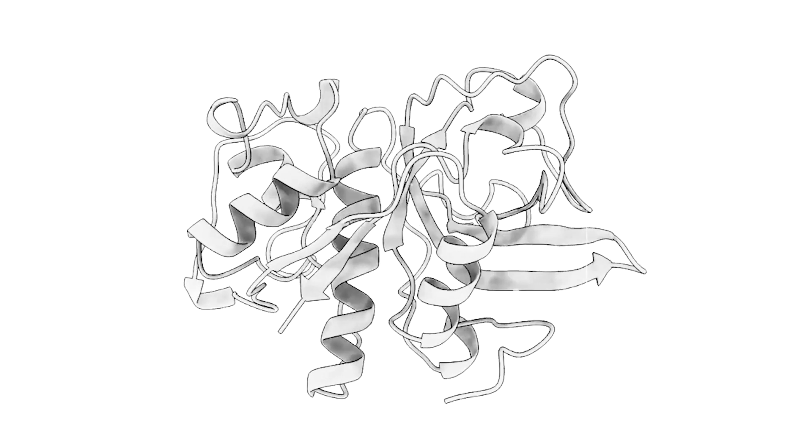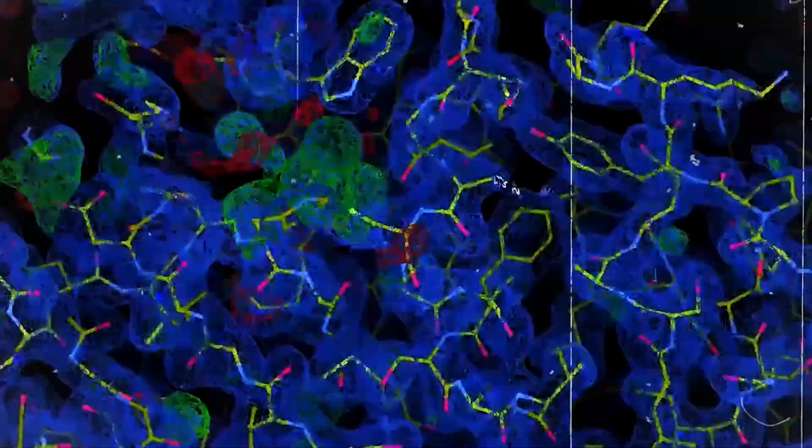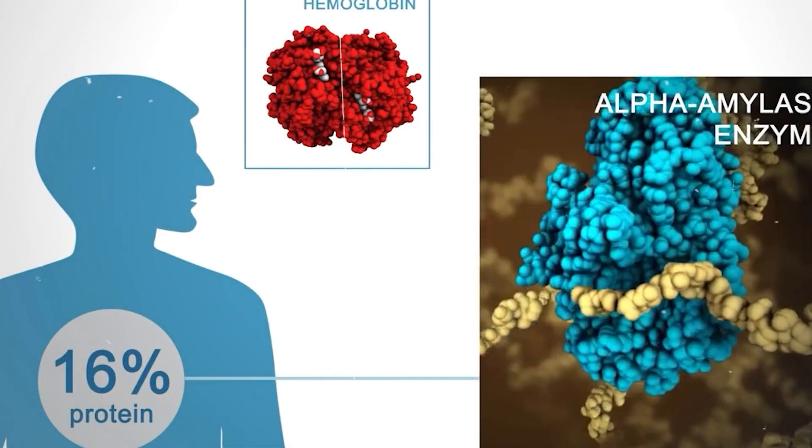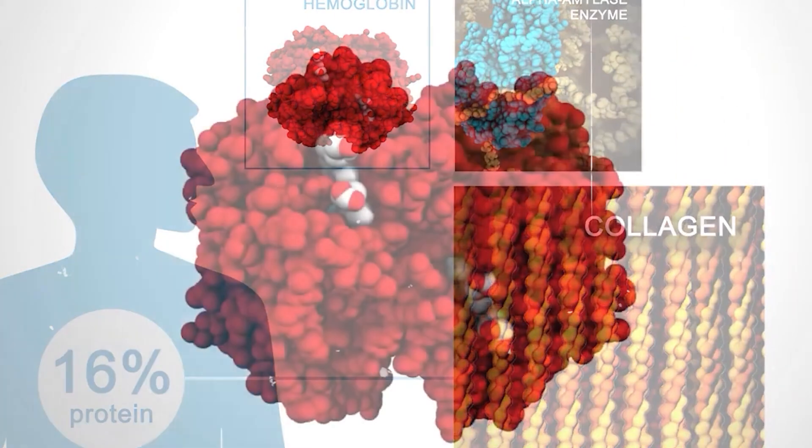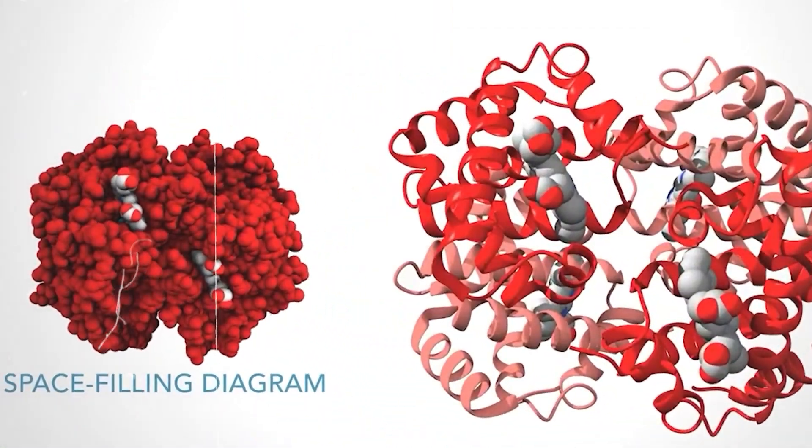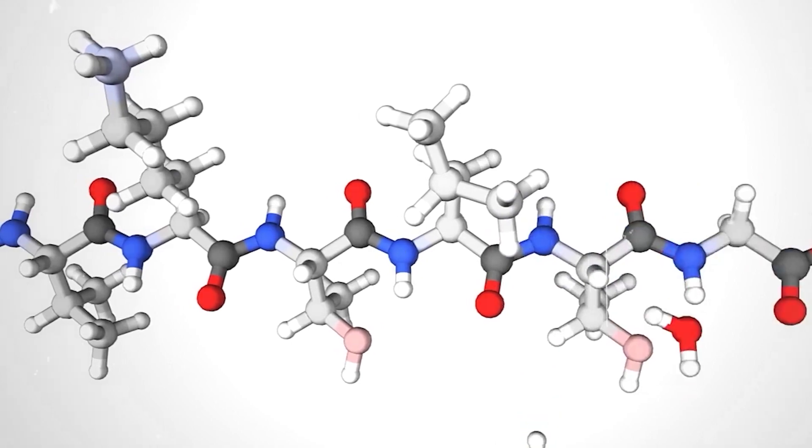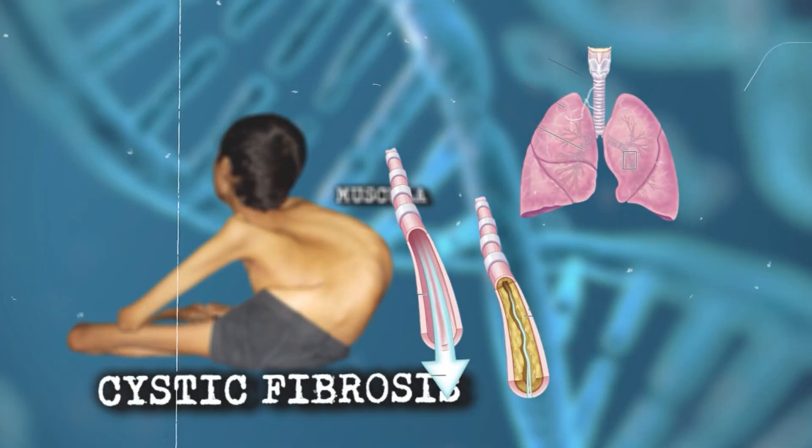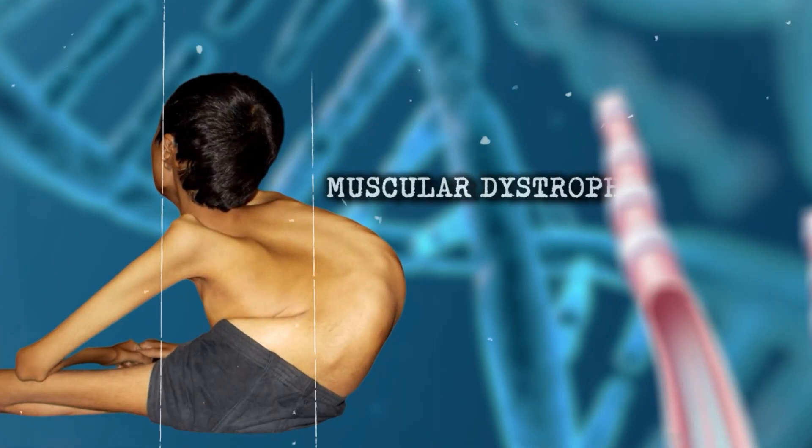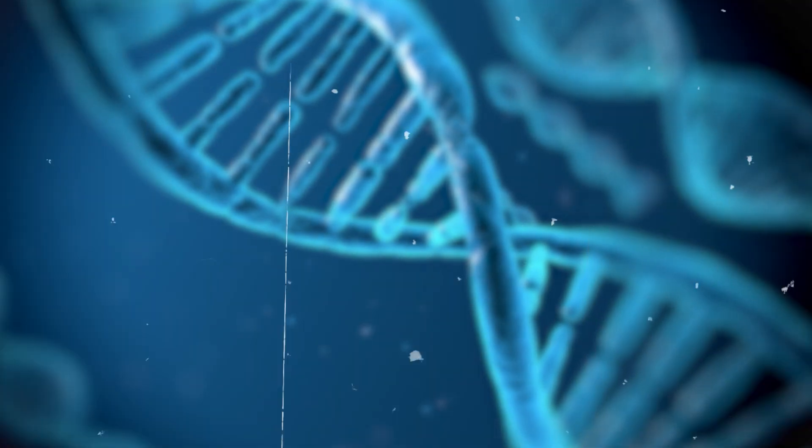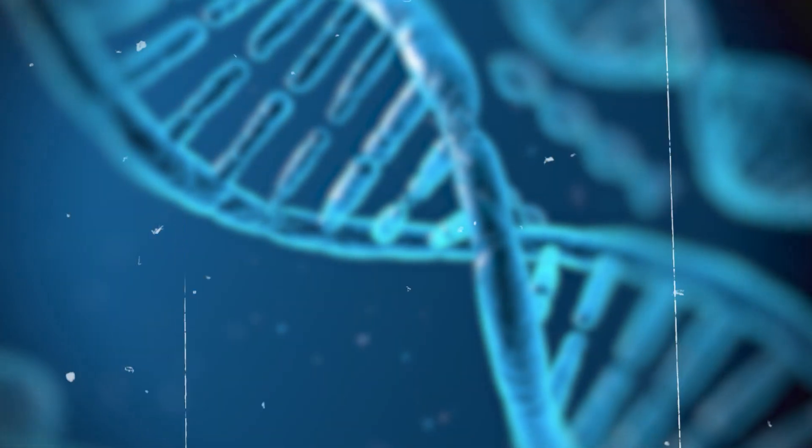This breakthrough has the potential to accelerate protein identification for biotech companies, allowing them to quickly utilize important proteins in developing powerful pharmaceuticals. Revolutionary technologies like this can greatly benefit diseases such as cystic fibrosis and muscular dystrophy. All the traditional ways of conducting experiments are getting outdated because of AI.